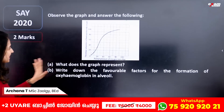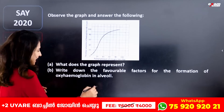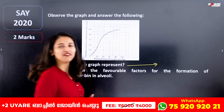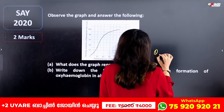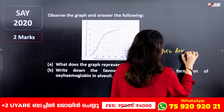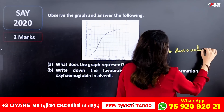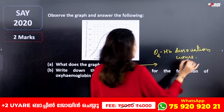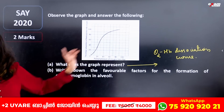If you want to ask questions about this first question, what do we say about this graph? This graph is called the Oxygen Dissociation Curve, also called the Oxygen Hemoglobin Dissociation Curve. If you want to ask about this curve, it is called a Sigmoid Curve, but it is also called the Oxygen Dissociation Curve.